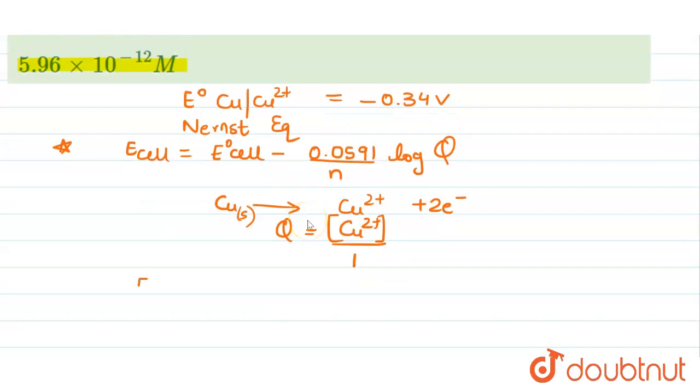So we'll write the equation now as E cell equals E⁰ cell minus 0.0591 upon N. N over here we can see copper is going from 0 to +2, so N is equal to 2, upon 2 into log of concentration of Cu2+.